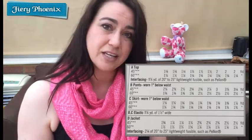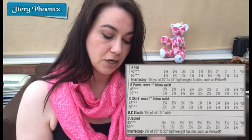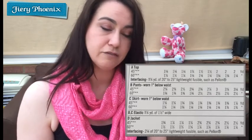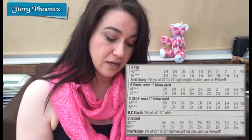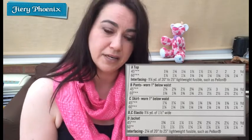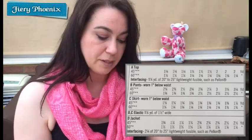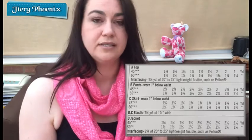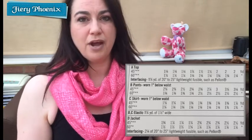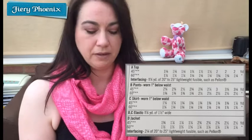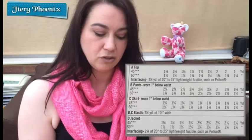The pattern will also tell you if you need interfacing and how much. For example, for a size 12 top you would need one and a quarter yards at 45 inches wide without any pattern, plus lightweight fusible interfacing — in this case it mentions Pellon as a specific brand. For the pants and skirt, it notes they are worn below the waist — where the waist marking refers to your belly button — and that the skirt or pants are worn about an inch below the belly button, so that is where you measure.